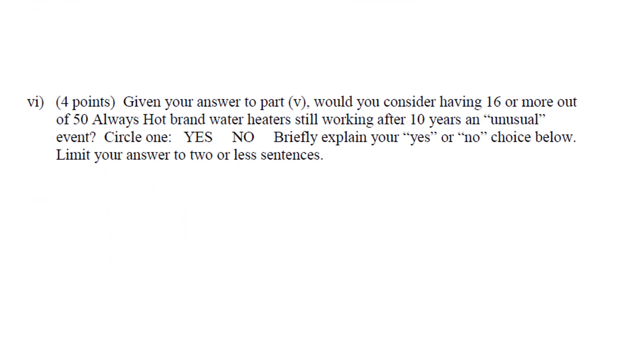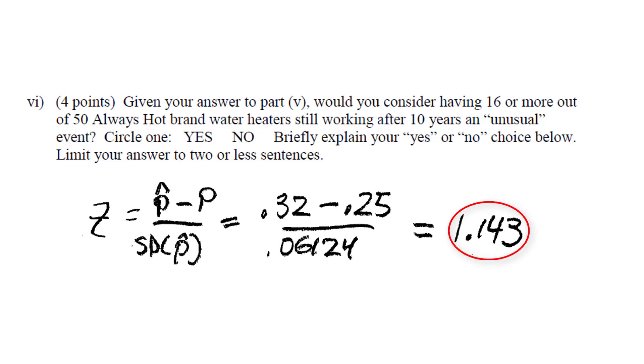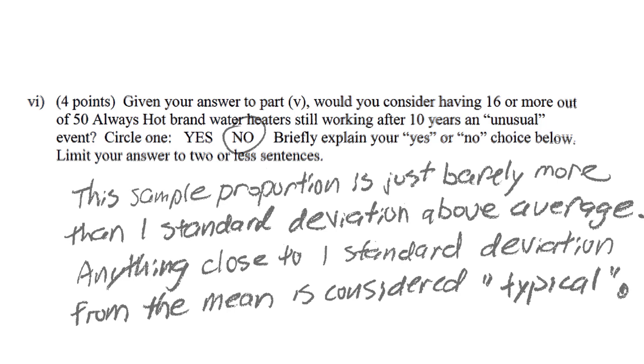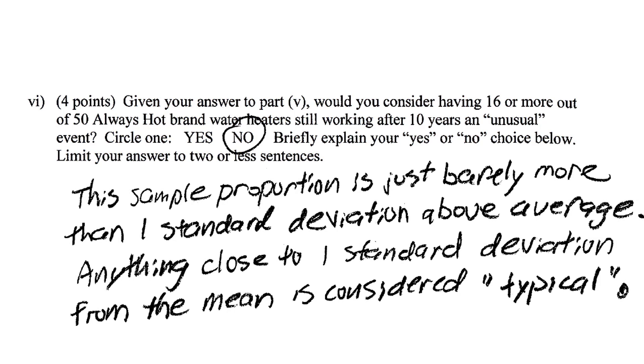Finally, given our answer above, would you consider having 16 or more out of the 50 water heaters still working after 10 years unusual? Well, look at our Z score. Our Z score is less than 2 in absolute value, and this means it could occur within 95% of the time. It's not that unusual. A Z score is a standardized metric of how unusual something is, and this Z score is close to 1, and that is not unusual. So no, our Z score is not that large. It is less than the absolute value of 2. And thus, we do not think it is that unusual.